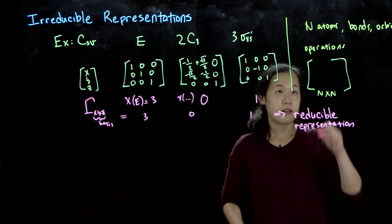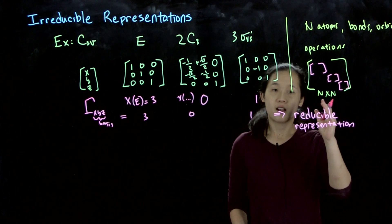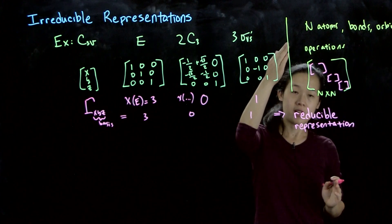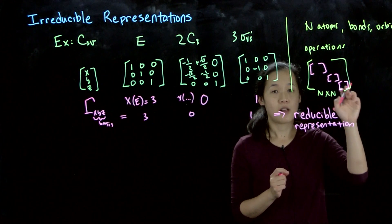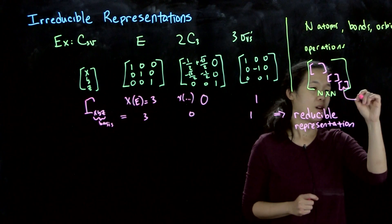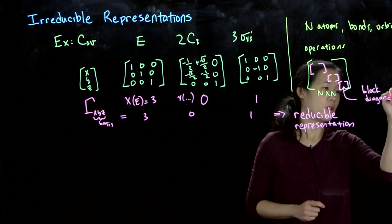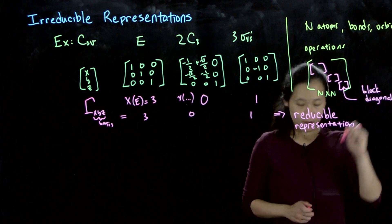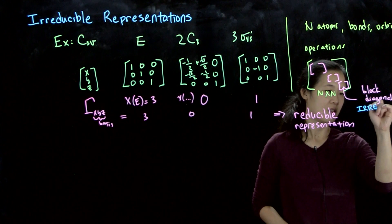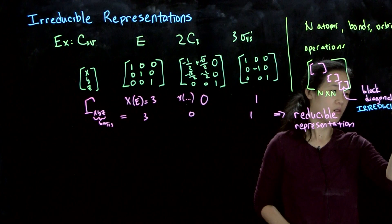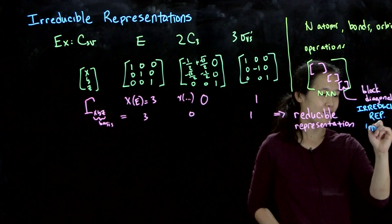But fortunately, what we can do is then block diagonalize the matrix into smaller matrices, and then build this up from a combination of some limited number of the block diagonalized matrices. These will be our irreducible representations. We can also call them irreps, just for short.